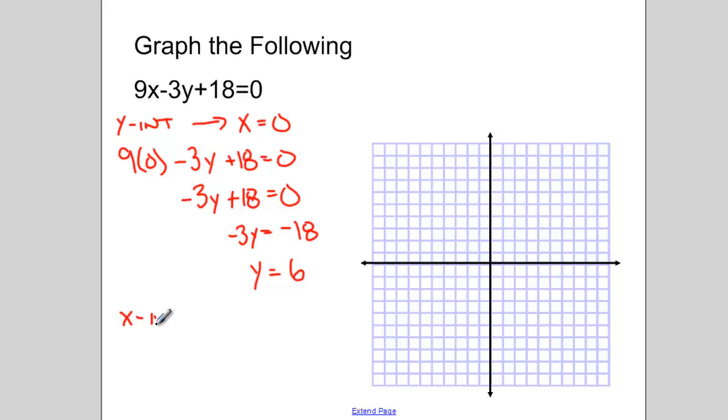The x-intercept found when y is equal to 0. Again, I have 9x minus 3 times 0 plus 18 equals 0, or 9x equals negative 18, or x equals negative 2.